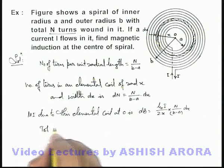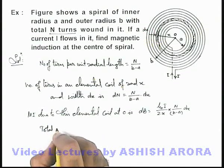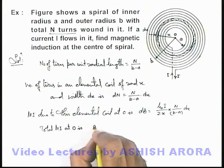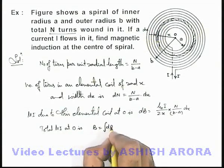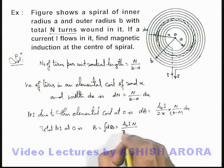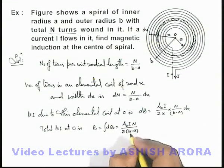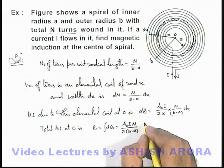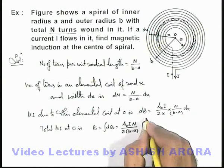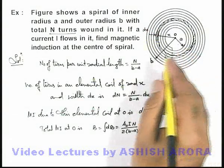Now we can simply integrate it and get the total magnetic induction at o. This B will be integration of dB, and here all constants μ₀, i, N by twice of (b-a) can be taken out of the sign of integration. Inside it is dx/x, we'll integrate it within limits from a to b for x.